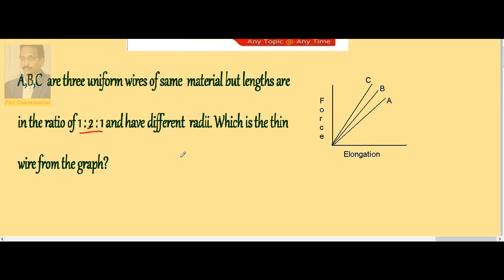The possible thin wire from the graph: we know that Y is equal to FL by AE. Here all are made of same material so Y is same, only thing length different, area different, no idea about F. Now from the graph let us take a constant force, imagine F is same in all cases.